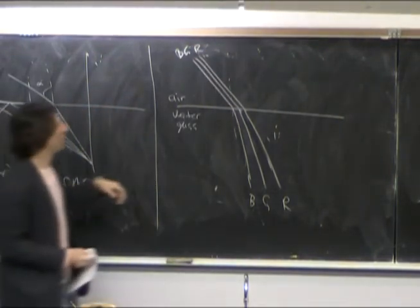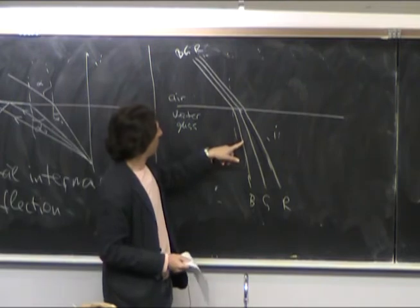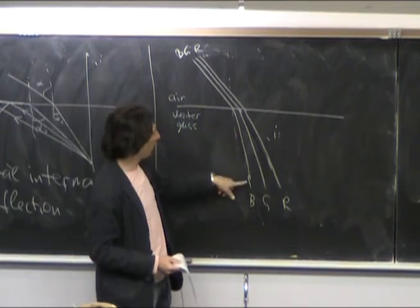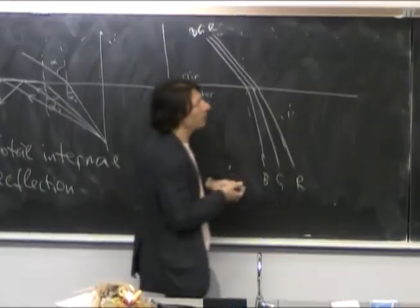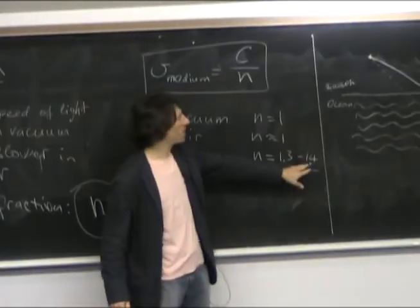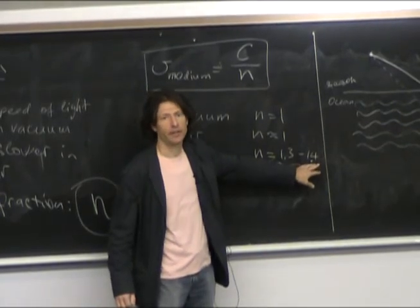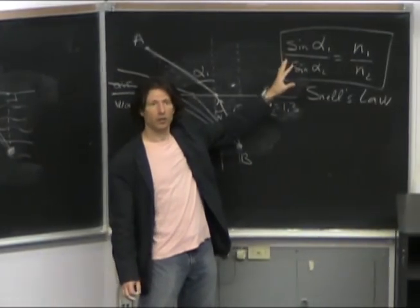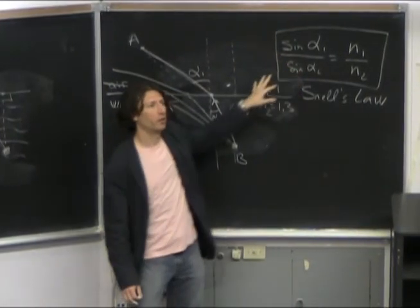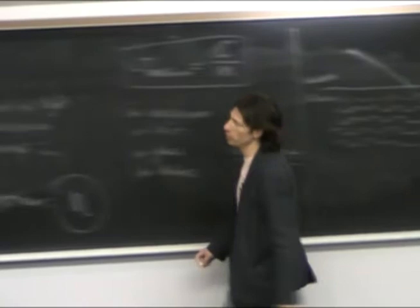So the deflection of blue is stronger than the deflection of green than the deflection of red. The index of refraction is slightly different depending on the color, right? So this ratio is different depending on whether you send red, blue, or green light through the interface between two materials.